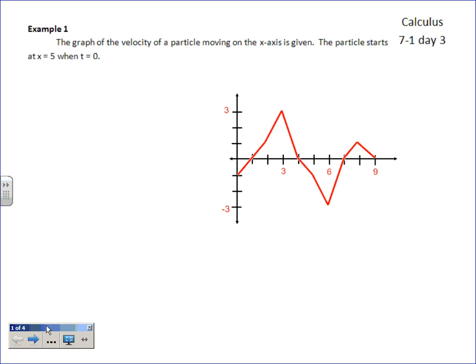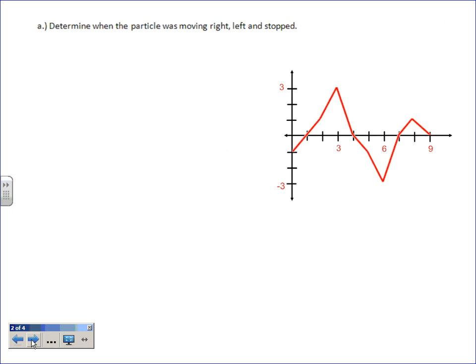All right, well what's our first question then? Determine when the particle was moving right, left and stopped. Well it looks like each tick mark is 1.